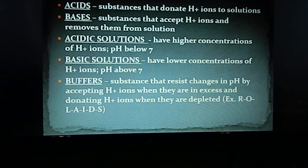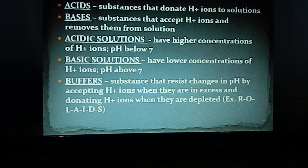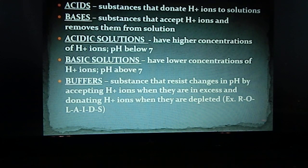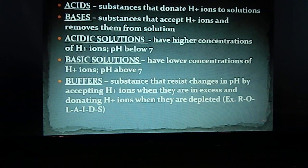Acids are substances that donate hydrogen ions into solutions. Bases are substances that accept or take out hydrogen ions from the solution. If you have a solution with a higher concentration of hydrogen ions — probably from adding an acid — the pH goes below seven and you have an acidic solution. A basic solution is where you have a lower concentration of hydrogen ions and the pH is above seven.